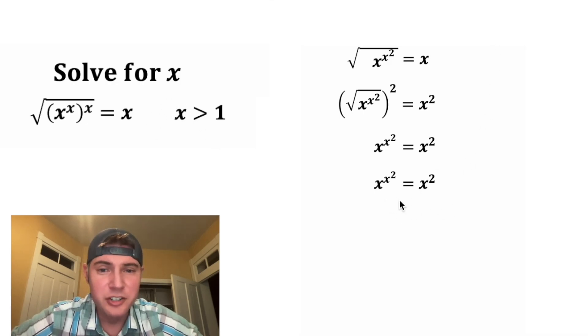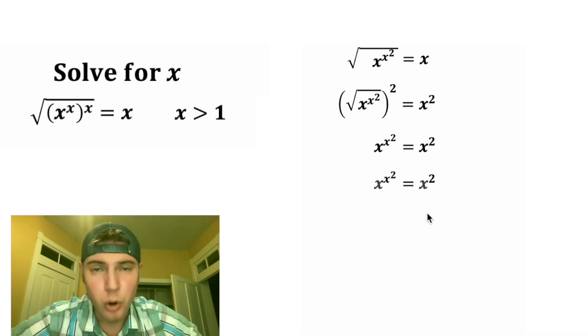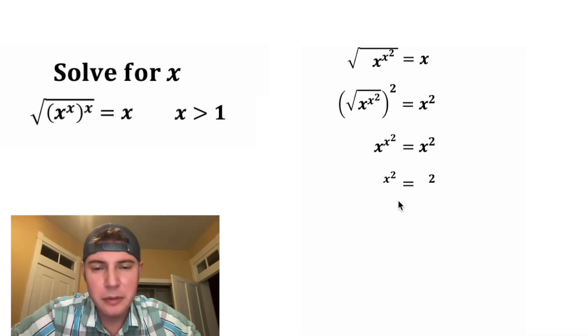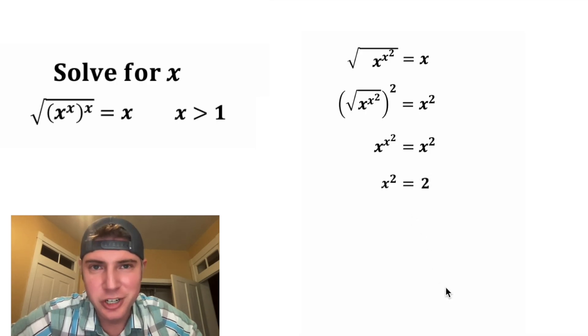Since x can't equal 1 or 0, that means the only way this is true is if the exponents are equal to each other. So we can drop the base and set the exponents equal to each other.